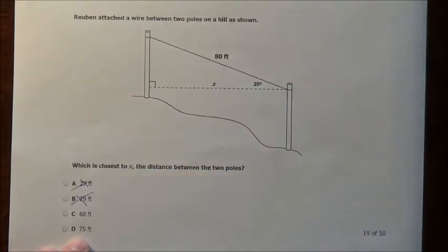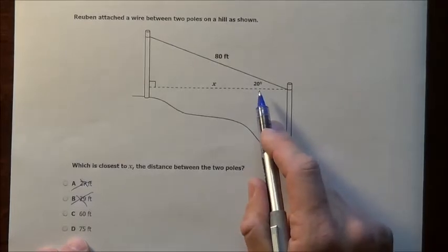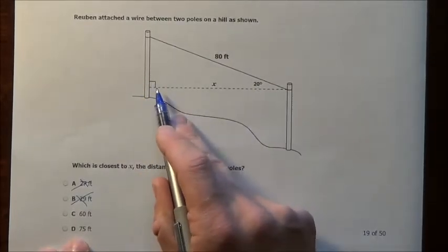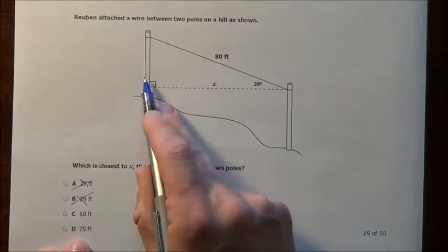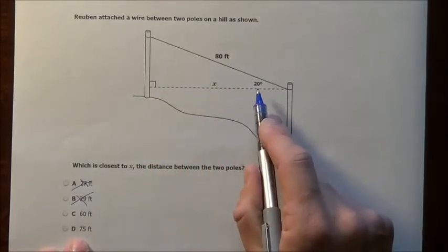But let's see what happens here. When we look at this they give us an angle, it's a right triangle. The first thing I think of with a right triangle is the Pythagorean theorem, but it doesn't give me but one side, it gives me an angle.